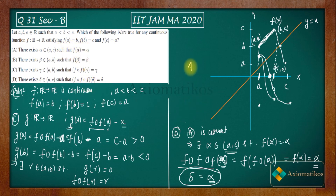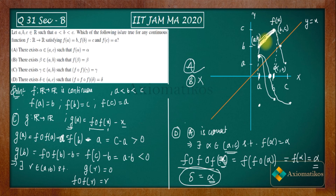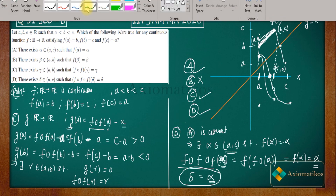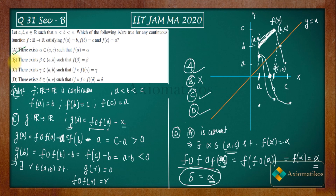So we proved option A is correct, gave a counter-example showing option B is incorrect, proved option C is correct using the composition F(F(x)) and the IVT, and proved option D is correct using the fixed point from option A. Therefore A, C, and D are the correct options. Thank you.